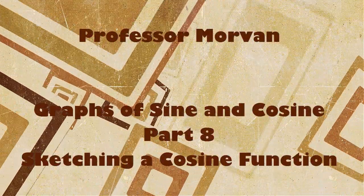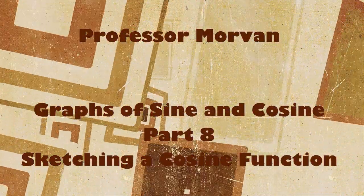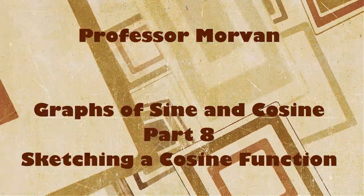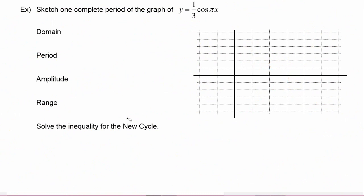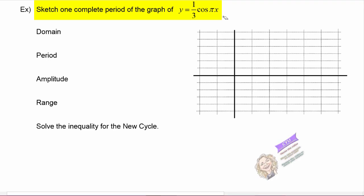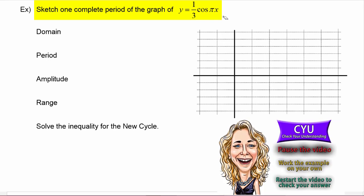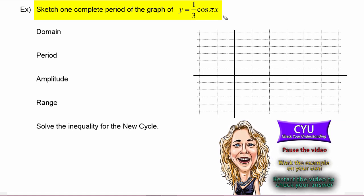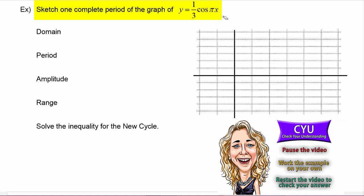In part eight of our lesson on graphs of sine and cosine, you'll be sketching a cosine function. In this example we'll sketch one complete period of the graph of y equals one third cosine of pi x. It's CYU time, so pause the video, work the example on your own, then restart the video to check your answer. Okay, let's see how you did.